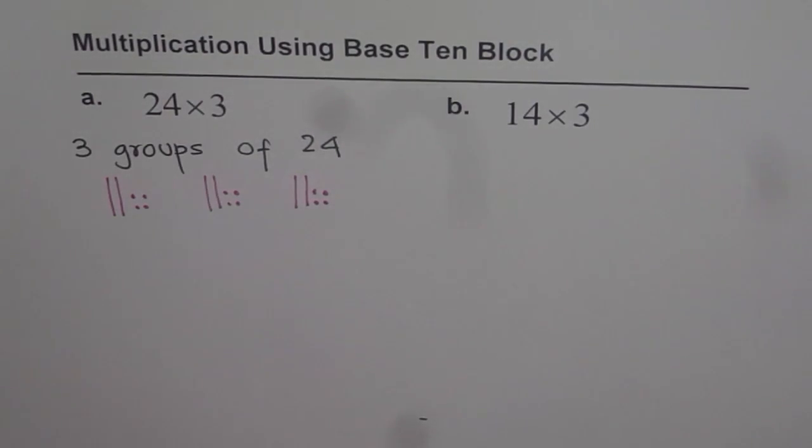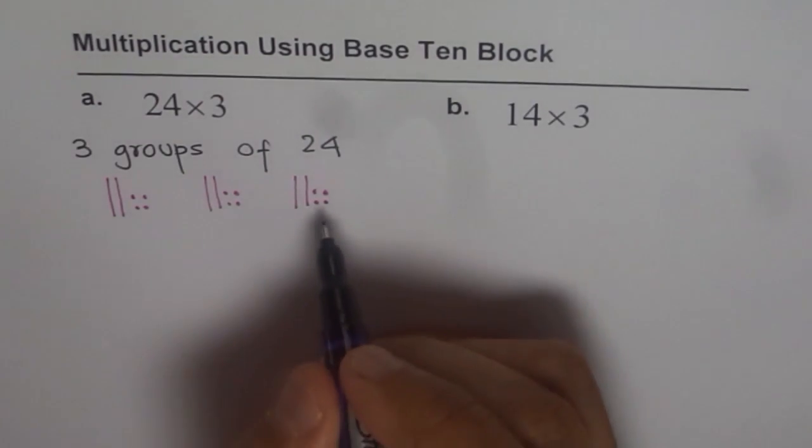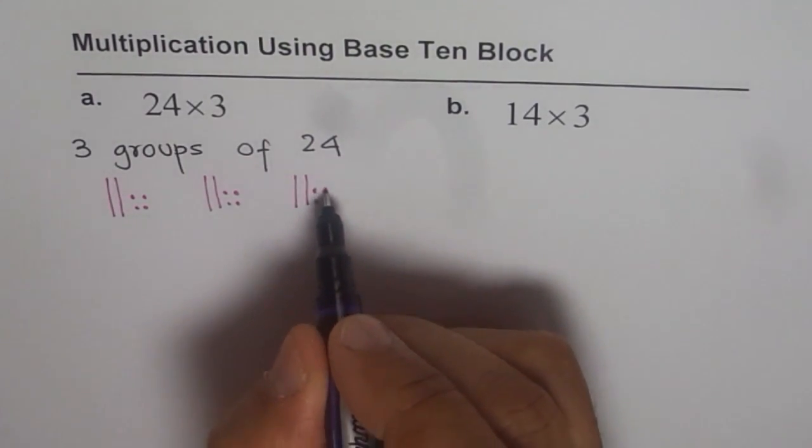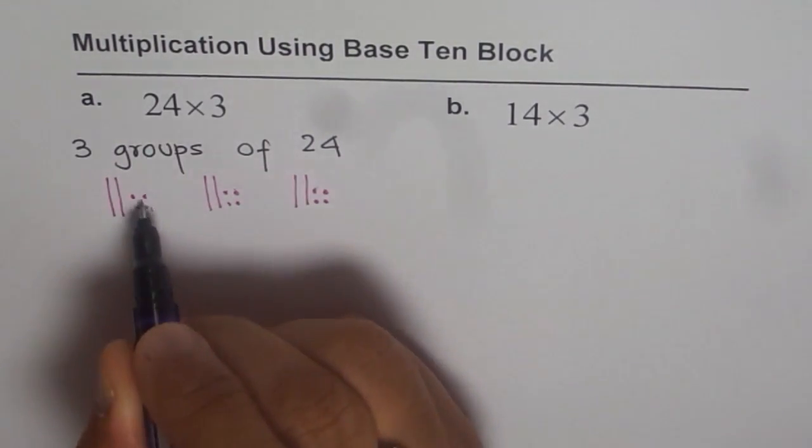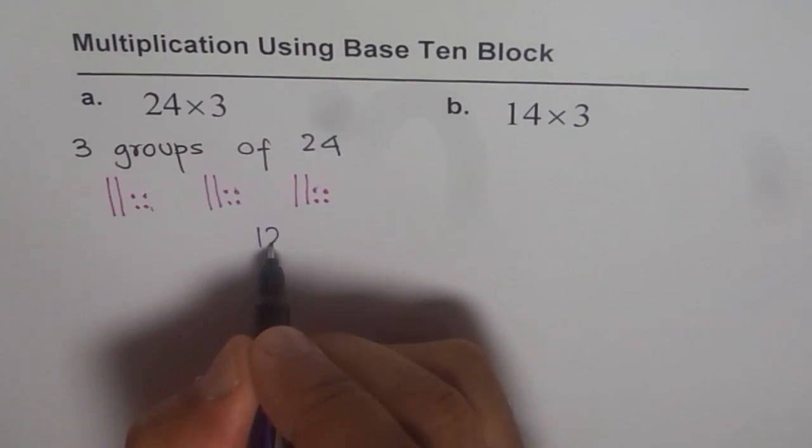Let's count. What number do we get? Let's count with 1's, right? 1, 2, 3, 4, 5, 6, 7, 8, 9, 10, 11, 12. We get 12 ones.